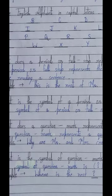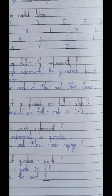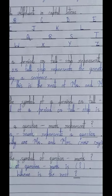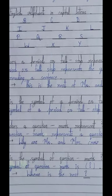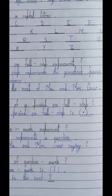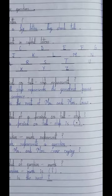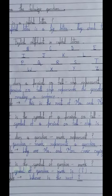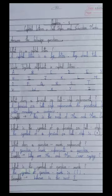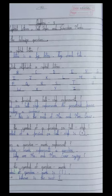Why are Mr. and Mrs. Crow crying? We can see in this sentence that it has finished with a question mark. The question mark is the symbol that represents a question - when someone is asking something, a question mark is used at the end of that sentence.